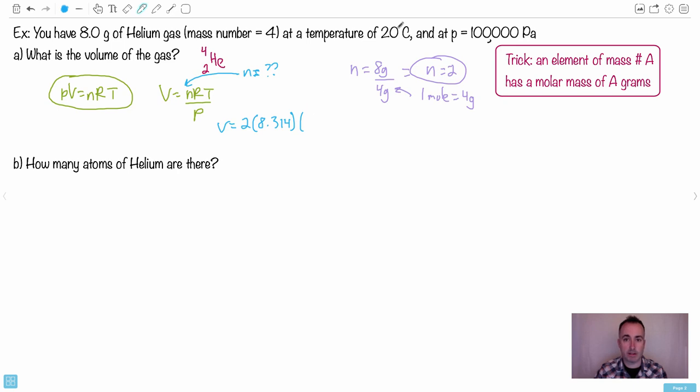Yeah, we have the temperature, which is 20 degrees Celsius, but what we need to do is put it in Kelvin. We always need the Kelvin temperature for this. So in this case here, we'll say 20 plus 273, because that's—zero degrees Celsius is 273 Kelvin.